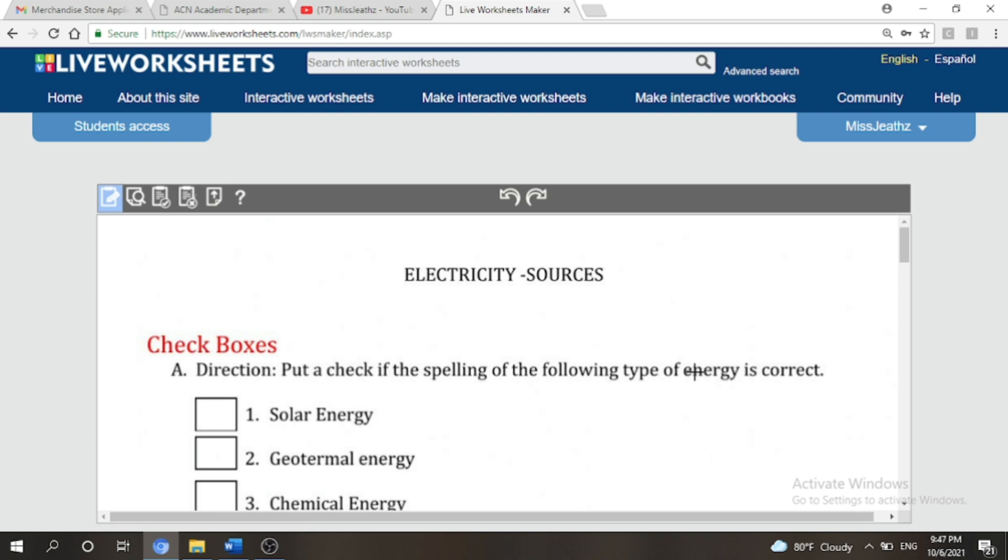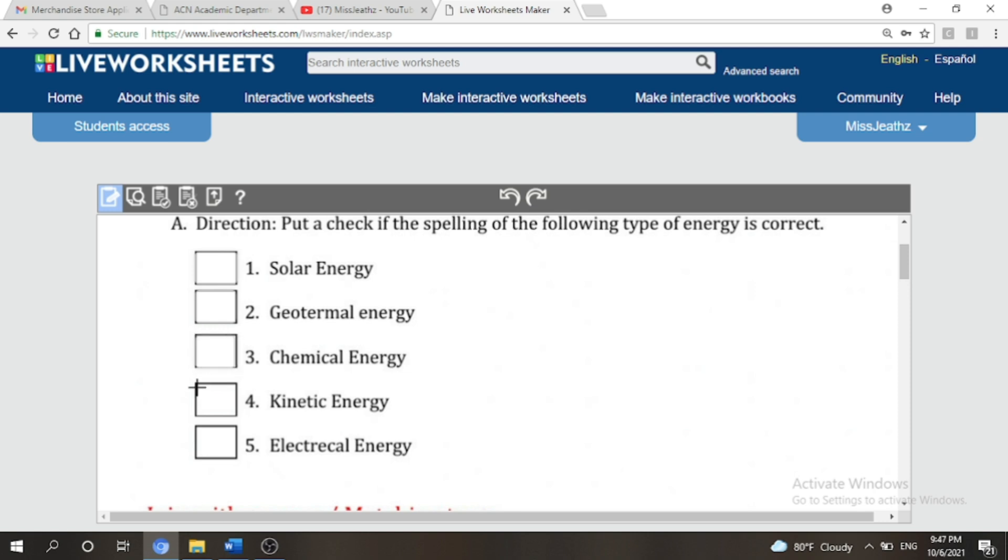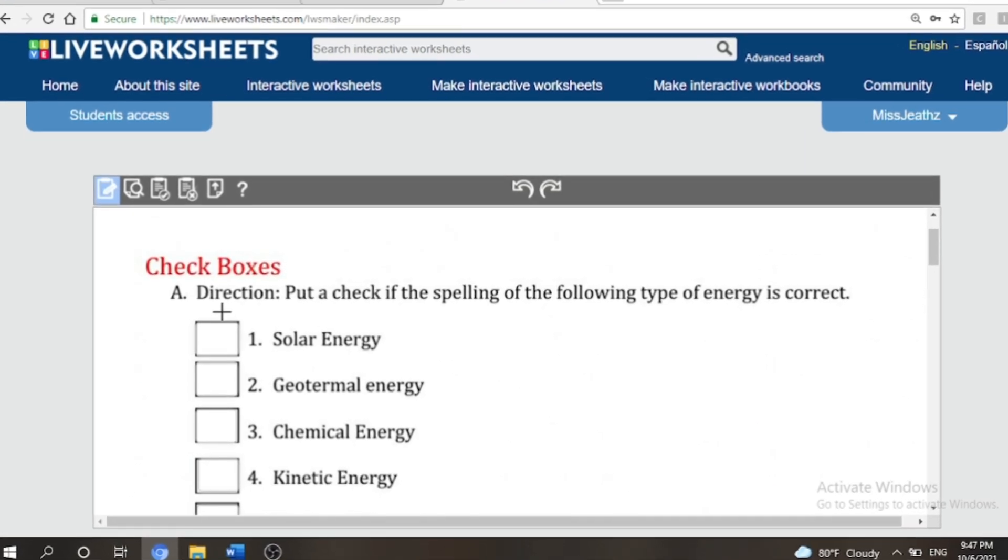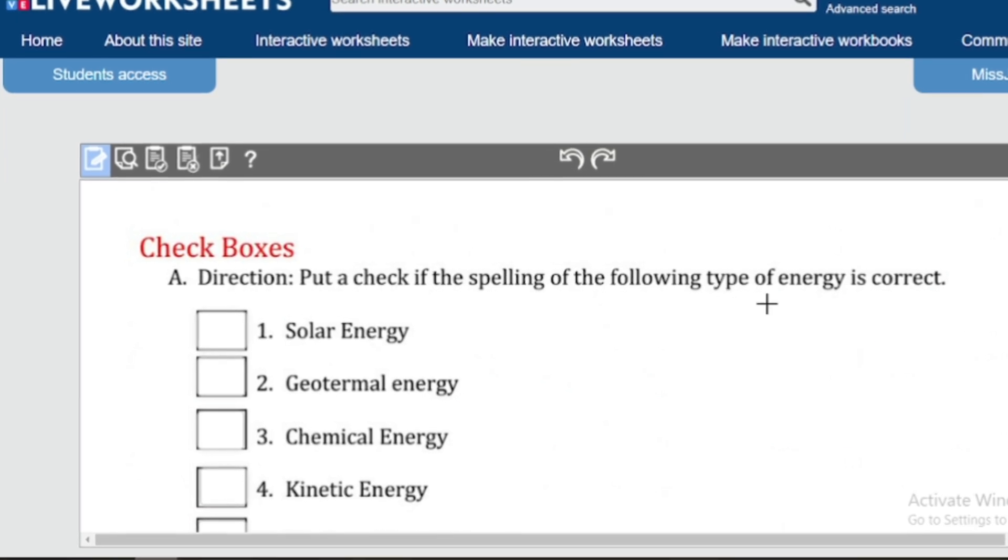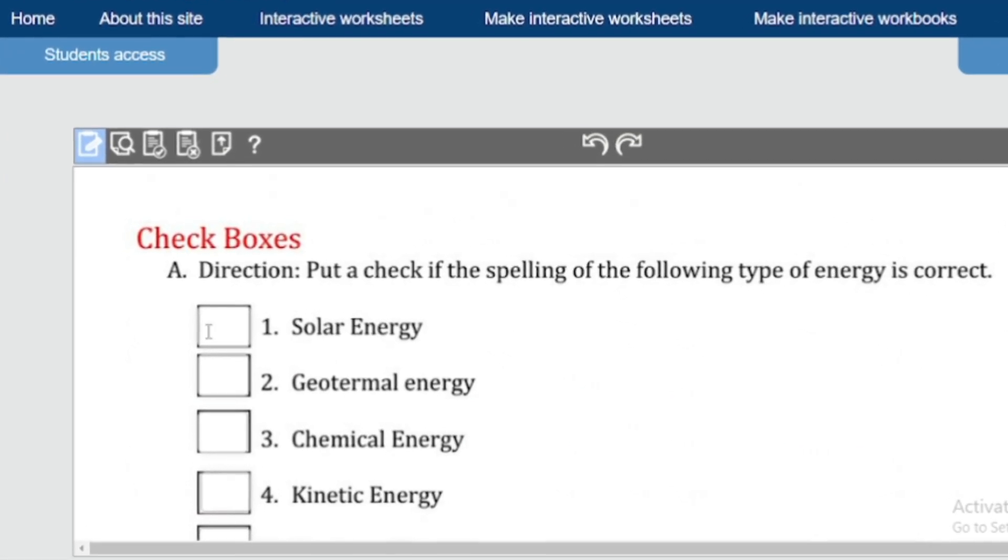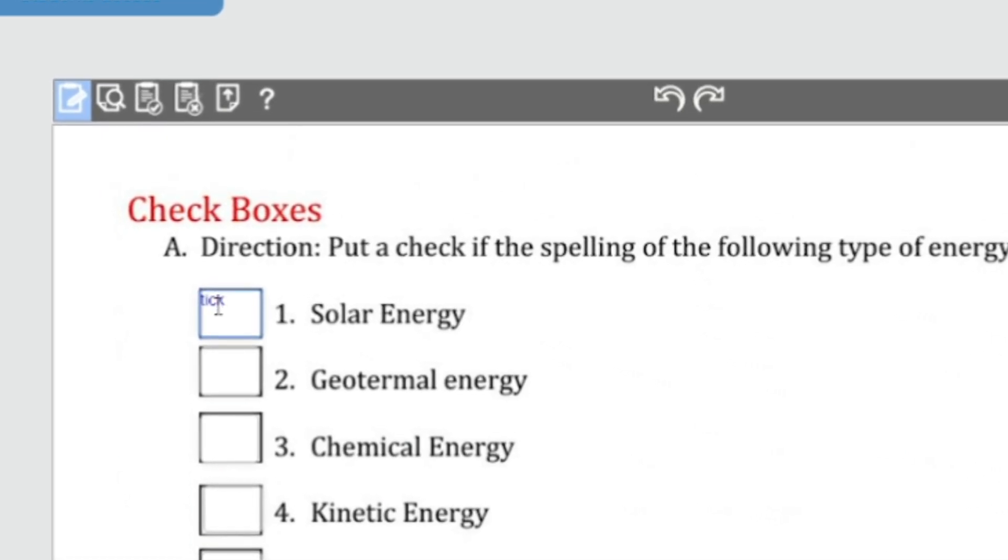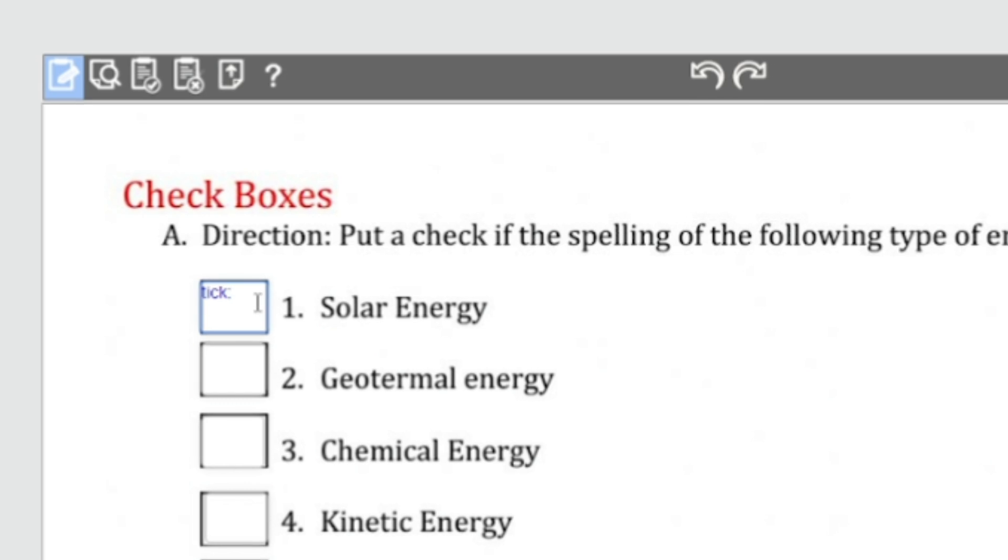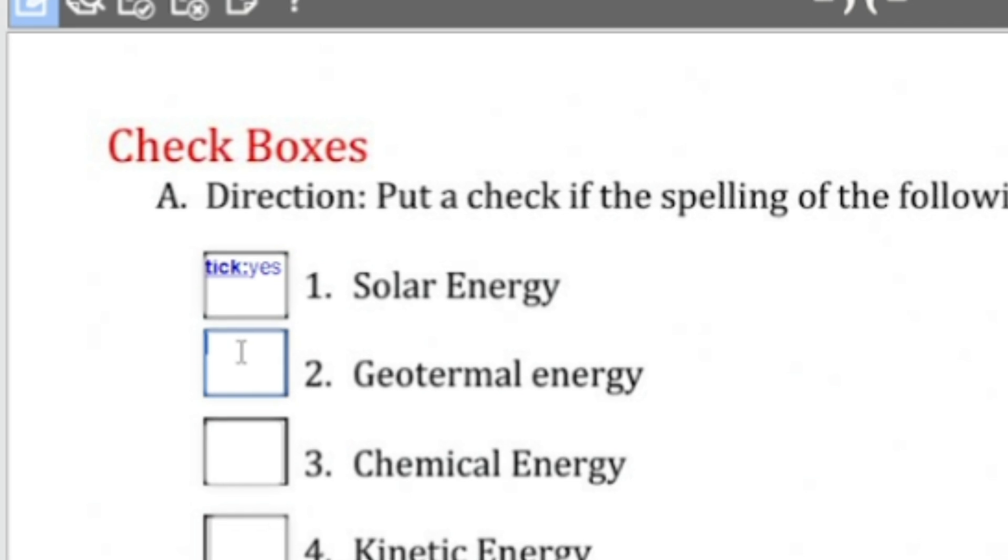For the check boxes, what we're going to do is we're going to make a box in each number. As you can see in the direction, put the check if the spelling of the following type of energy is correct. So the command that we're going to use here is the word tick colon, and then yes for the correct answer and no for the wrong answer.